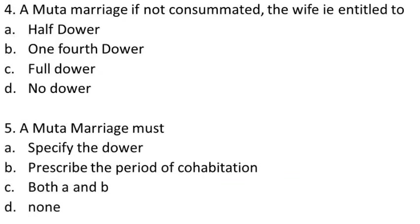Question 4: In a Muta marriage, if not consummated, the wife is entitled to — (A) half dower, (B) one-fourth dower, (C) full dower, (D) no dower. The answer is A: she is entitled to half dower.